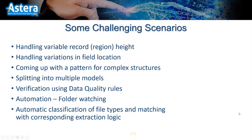Here is a list of scenarios we have seen in the past that we'll focus on in today's webinar. The first one is handling variable records — data extraction models typically have records that are one line in height, but in some cases they can be two, three, or four lines. When you don't know beforehand how high the record is going to be, we have built-in features to handle that.